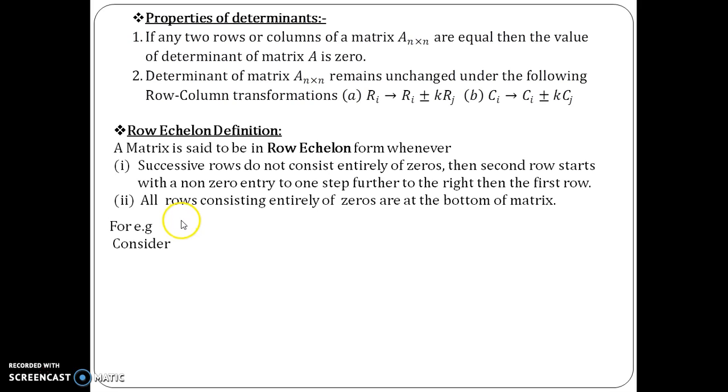So, let us consider this example. Now, see what the definition says: successive rows do not consist entirely of zeros and the second row starts with a non-zero entry one step further to the right than the first row. So, here the successive rows are—this is a 5×5 matrix—the successive rows are 1, 2; 2, 3; 3, 4; and 4, 5.